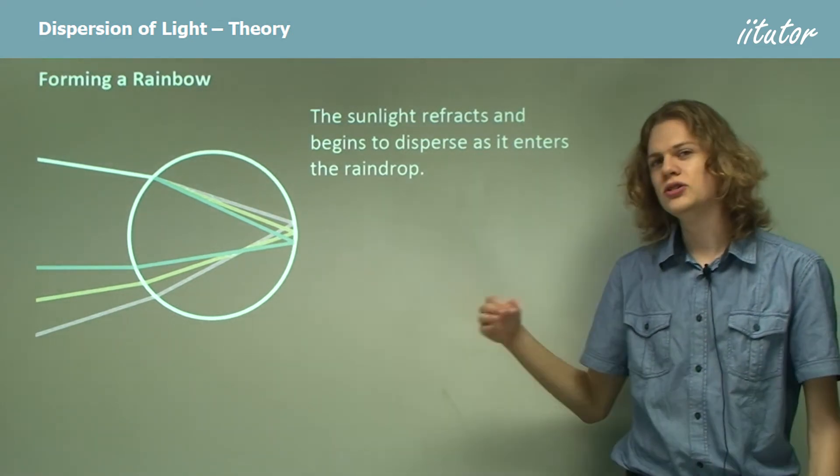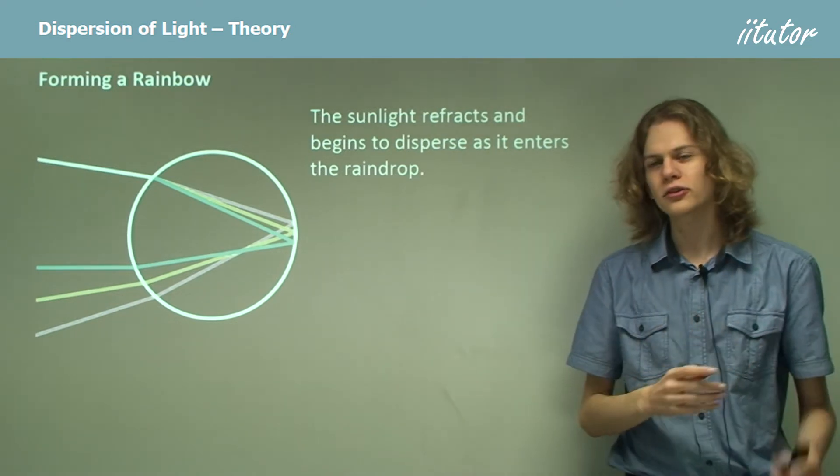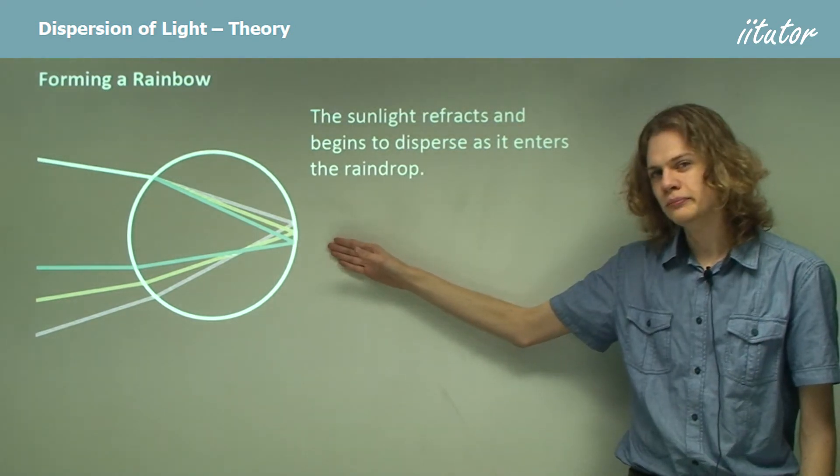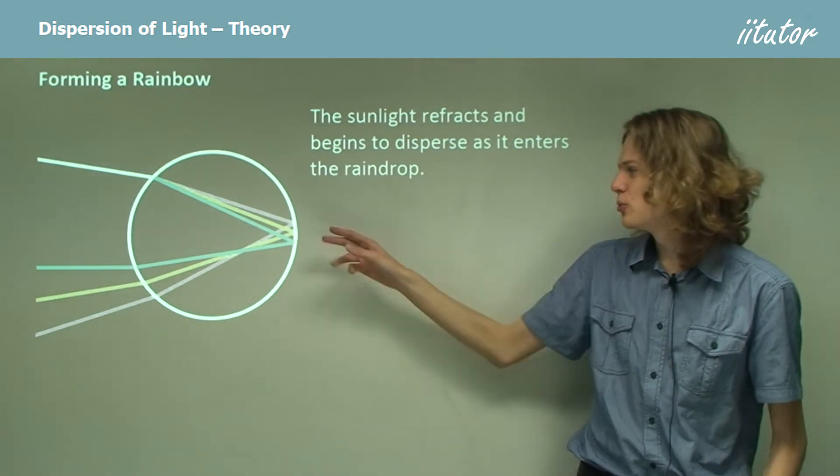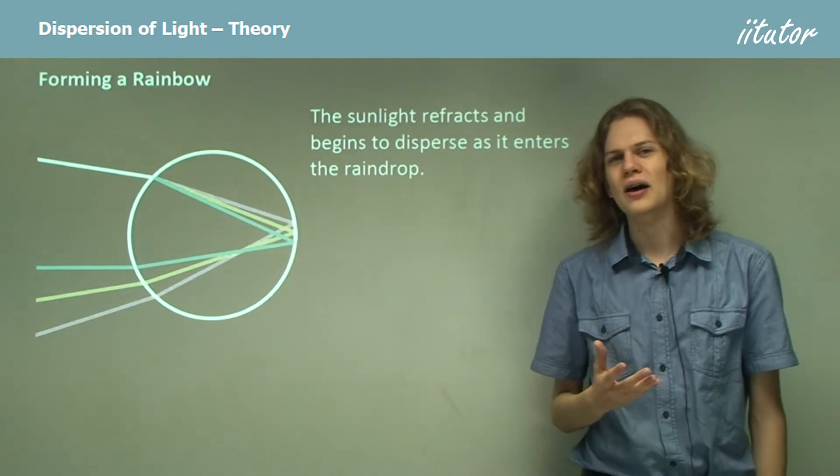And of course, the yellow light, which is in between the red and blue wavelengths, will be slightly in between these two. There's obviously an almost infinite amount of colors in between red and blue, but I've left most of them out for clarity.